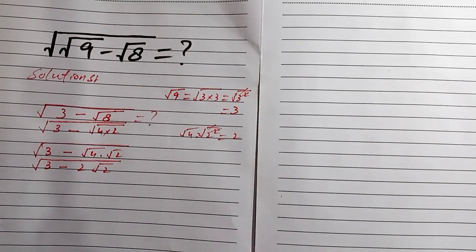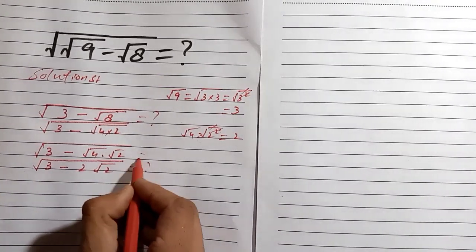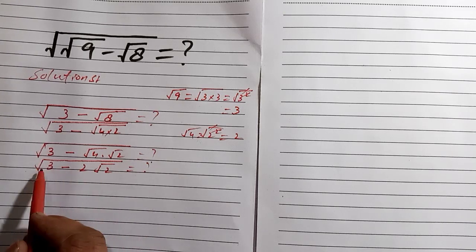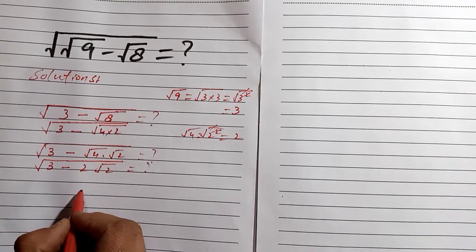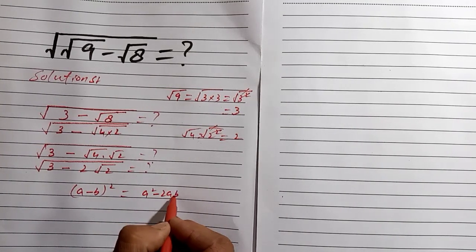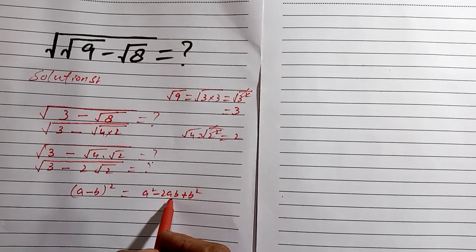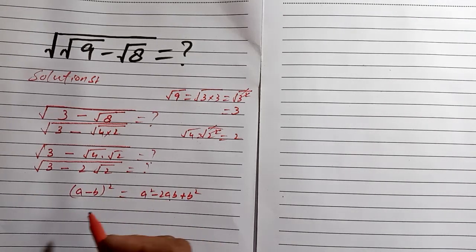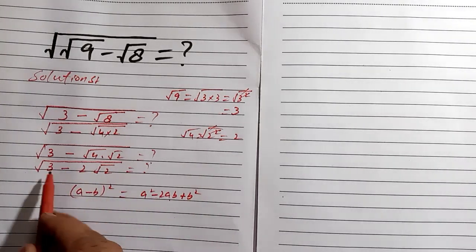Now we want to simplify this expression. We use the formula: (a minus b) squared equals a squared minus 2ab plus b squared. If we can write our term in this form, the square will cancel with the outer root and we get our final answer.